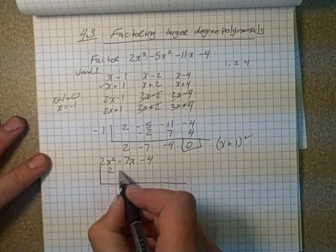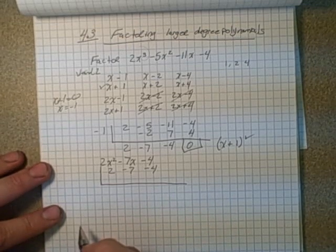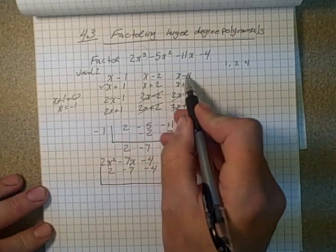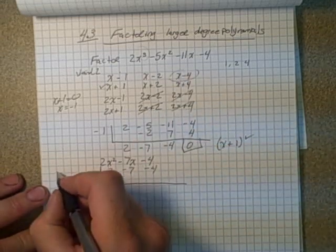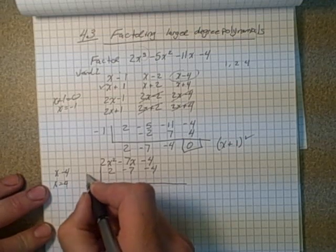So in our case here, I'm going to choose, let's say x equals, let's go with this one, x minus 4. So x minus 4. So x equals 4. So I'll put a 4 here.